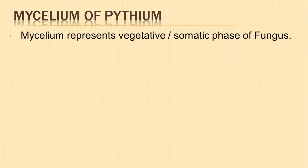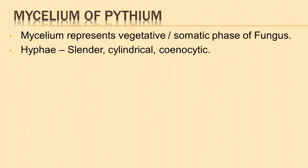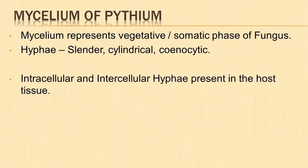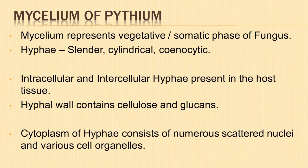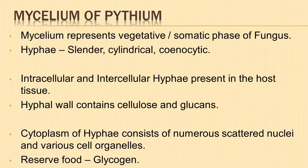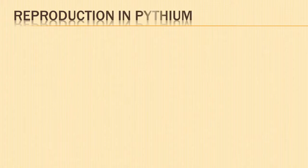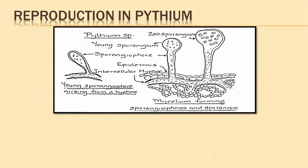We shall take up Pythium debaryanum to describe the general life history of Pythium. The mycelial plant body represents the vegetative or somatic phase of the fungus. It consists of slender cylindrical hyaline coenocytic hyphae. The hyphae within the host tissues are both intracellular and intercellular and do not produce haustoria. The hyphal wall contains cellulose and glucans, and the hyaline cytoplasm contains numerous scattered nuclei, mitochondria, endoplasmic reticulum, and ribosomes. Reserve food is in the form of glycogen.